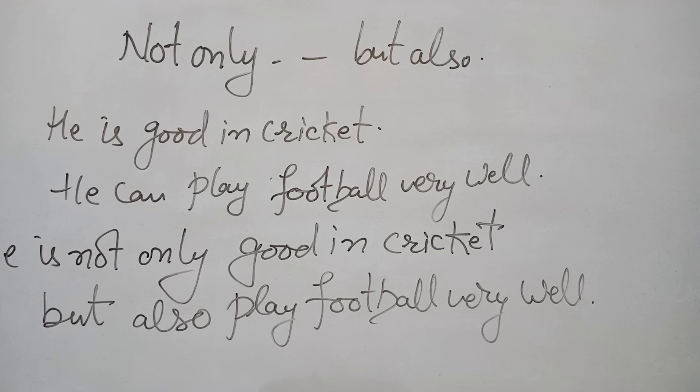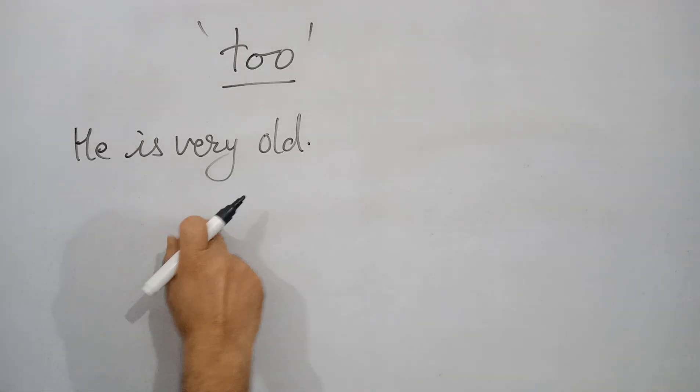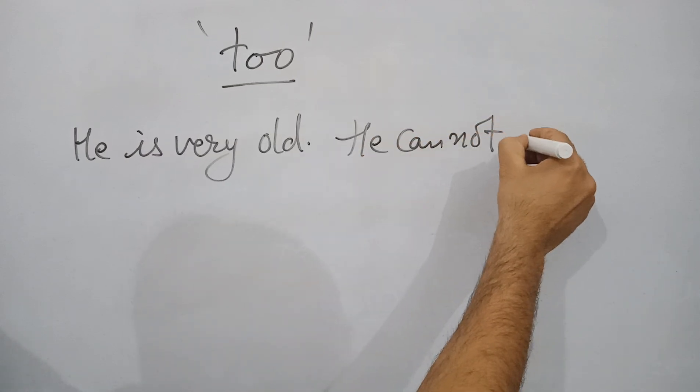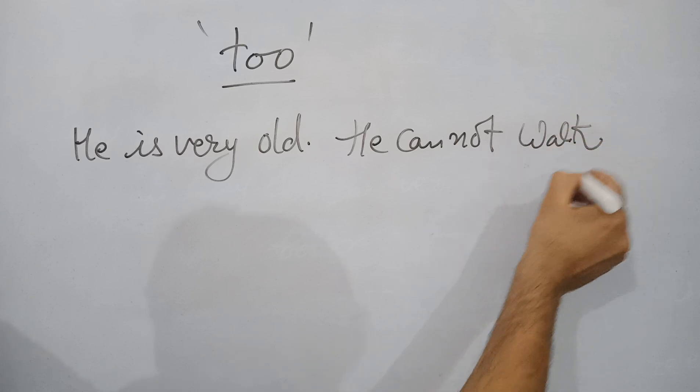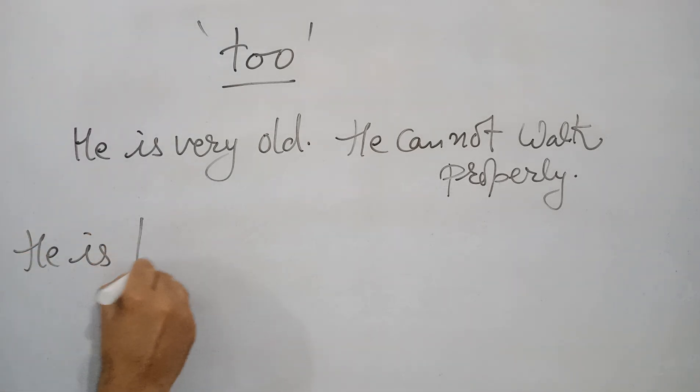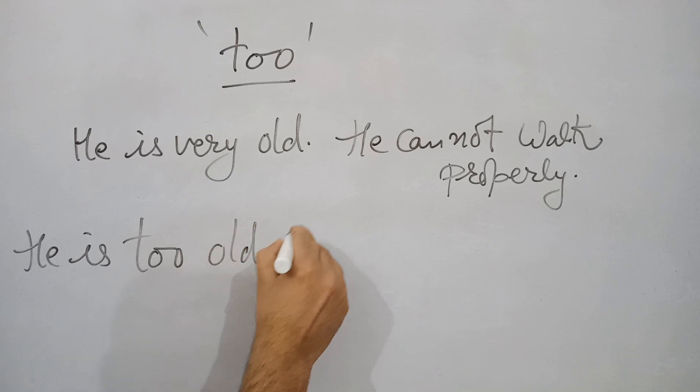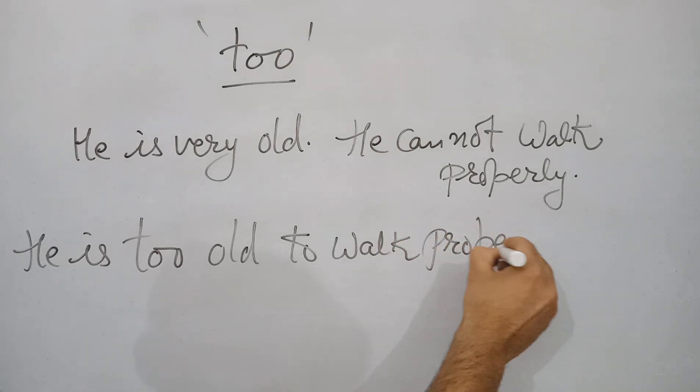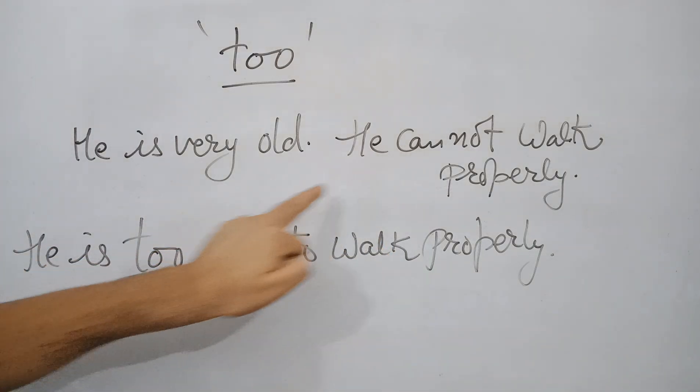Next is: He is very old, he cannot walk. The new sentence is: He is too old to walk properly. This is a much better sentence as compared to these two simple sentences.